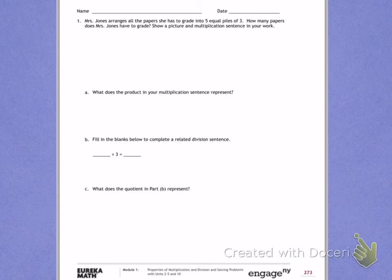This is Module 1, End of Module Review, Page 1. Our objective over the second part of our unit was to learn about properties of multiplication and division and solving problems with units of 2 through 5 and 10.